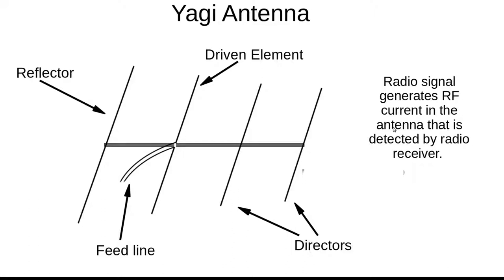Elements not connected to the feed line but influencing antenna performance — either directing or reflecting signals — are called parasitic elements. In the Yagi, elements in front of the driven element are called directors; they direct the signal in a specific direction rather than reflecting it. This is a directional antenna that focuses RF energy in one direction. Radio signals received by the antenna are focused to the coaxial cable by the driven element and reflected off the reflector, generating RF current detected by the radio receiver.